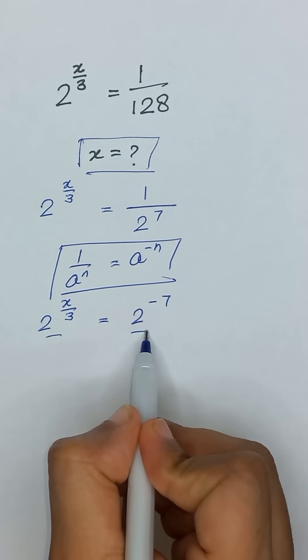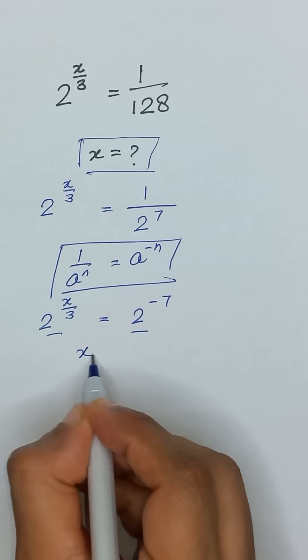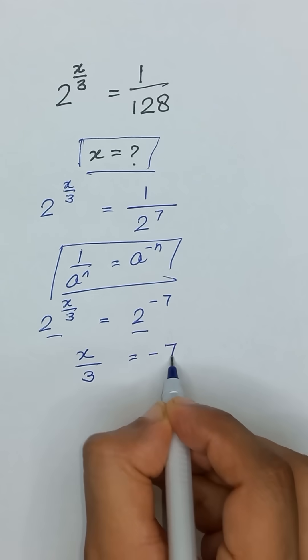Now we have bases are the same, so we can equate its powers. So it will become x divided by 3 is equal to minus 7.